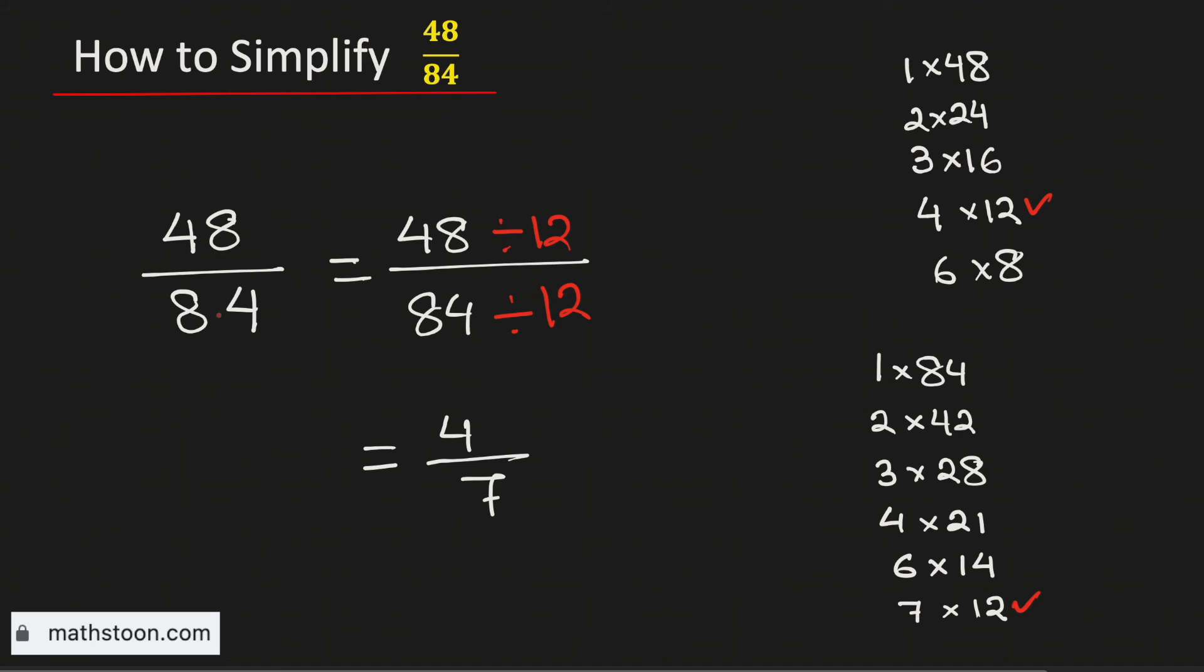Therefore, 48 over 84 simplified is equal to 4 over 7, and this is its lowest form.